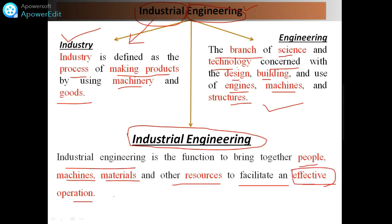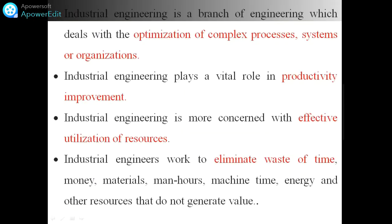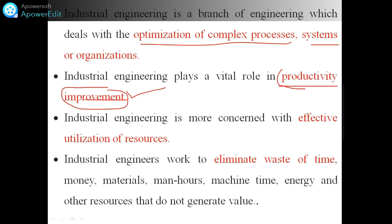This effective operation is what we have to achieve as an industrial engineer. Industrial engineering is the branch of engineering which deals with optimization of very complex processes, systems, or organizations. Industrial engineering plays a vital role in productivity improvement, which is a major requirement nowadays. During any production, everyone thinks: I have to increase my productivity with the same manpower, same machinery, and less cost investment.